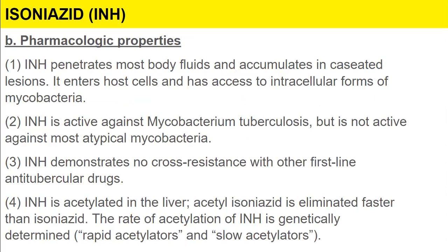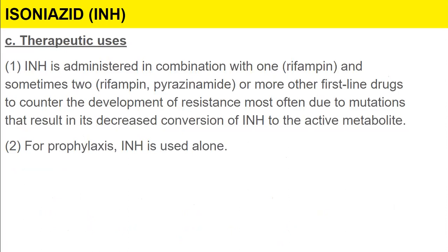Isoniazid penetrates most body fluids and accumulates in caseated lesions. It enters host cells and has access to intracellular forms of mycobacteria. It is active against Mycobacterium tuberculosis but not against most atypical mycobacteria, and demonstrates no cross-resistance with other first-line anti-tubercular drugs. It is acetylated in the liver; acetyl-isoniazid is eliminated faster than isoniazid. The rate of acetylation is genetically determined — rapid and slow acetylators.